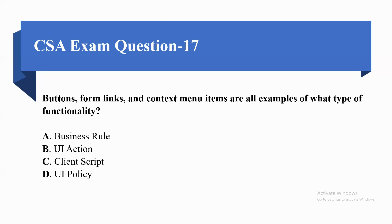Next question: buttons, form links, and context menu items are all examples of what type of functionality? Option A business rule, option B UI action, option C client script, or option D UI policy. The correct option is UI action, because UI actions contain buttons, form links, and context menu items.